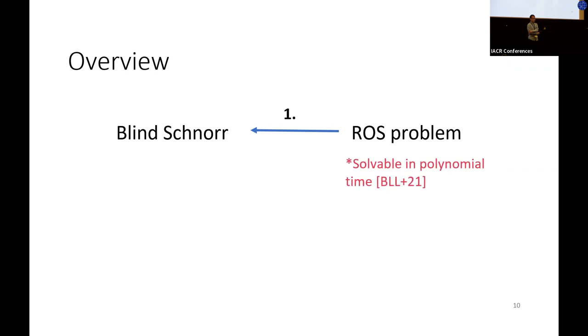So the overview of my talk is as follows. To give you some intuition about our constructions, I will first recall what blind Schnorr signatures are and show their relation with the ROS problem. In particular, I will show how one can break the one-more unforgeability of blind Schnorr by solving the corresponding ROS problem. And since the ROS problem is solvable in polynomial time, this gives a polynomial time attack against blind Schnorr.